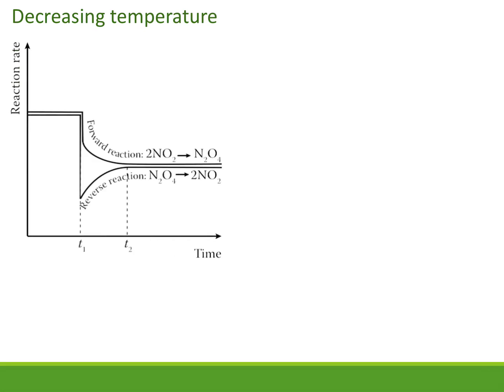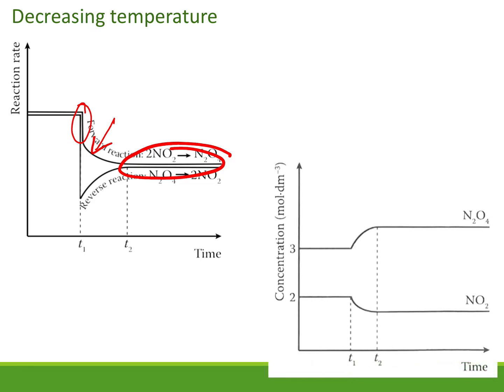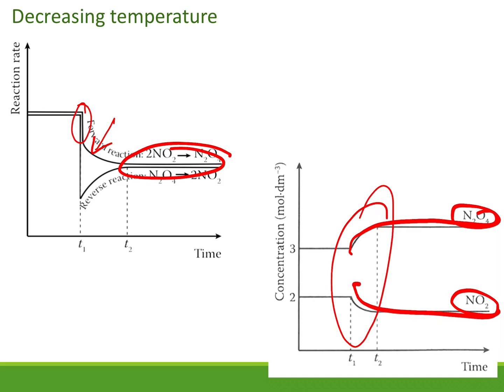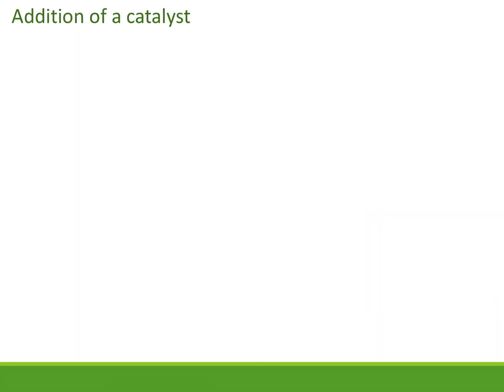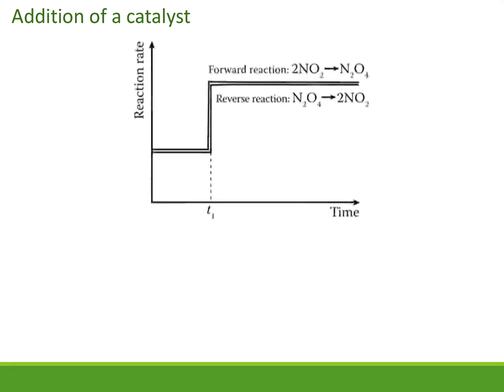When temperature is decreased, the equilibrium rate is lower and the forward reaction is favored. This means the forward reaction is exothermic — decreasing temperature favors the exothermic direction. So we make lots of product and use up the reactant. These are gentle changes with no spikes, unlike concentration changes.